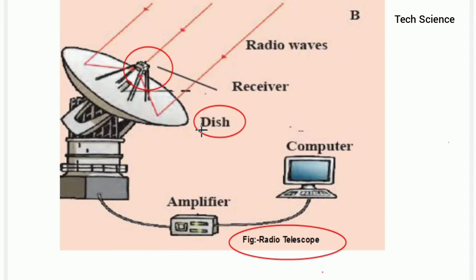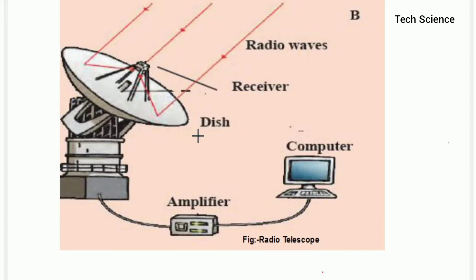The radio wavelengths are much longer compared to visible light, so a radio telescope must be very large in order to attain the resolution of an optical telescope. The first radio telescope was built in 1937 by Grote Reber. It is a steerable paraboloid — a device with a parabolically shaped reflector. The most widely used antenna shape is the parabolic dish.